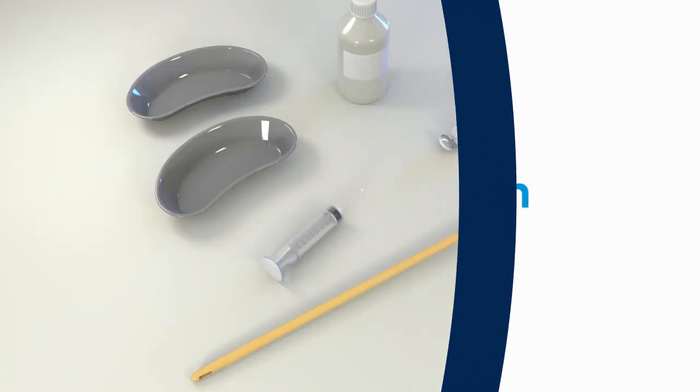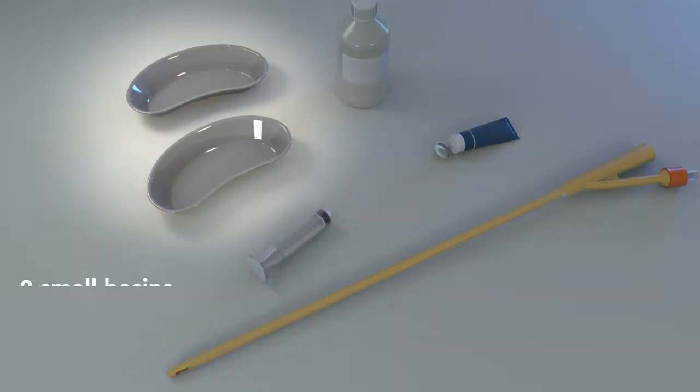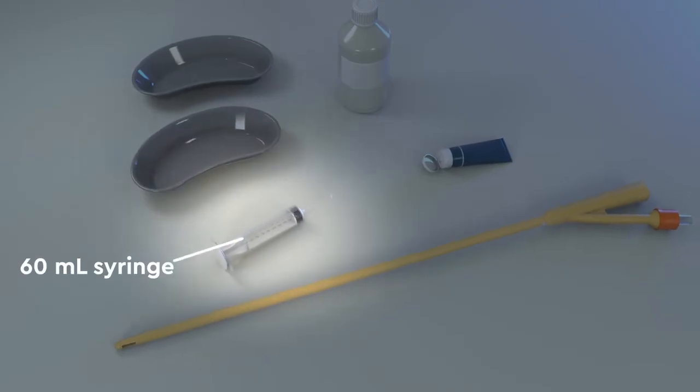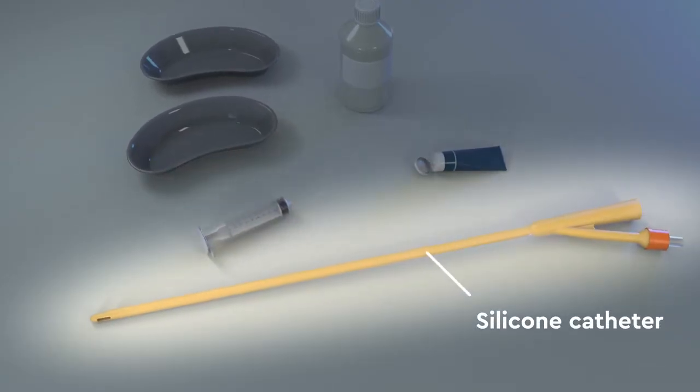You'll need the following supplies in order to perform a rectal irrigation: two small basins, a 60 milliliter syringe with catheter tip, and a silicone catheter.